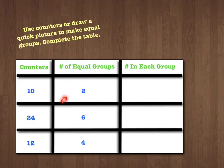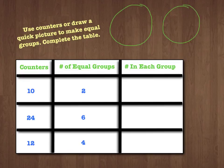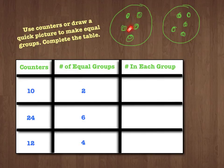So let's draw 2 equal groups, and then count out 10 counters: 1, 2, 3, 4, 5, 6, 7, 8, 9, 10. How many do I end up with in each group? 1, 2, 3, 4, 5 — and 1, 2, 3, 4, 5. So I end up with 5 in each group. 10 counters into 2 equal groups gives me 5 in each group.